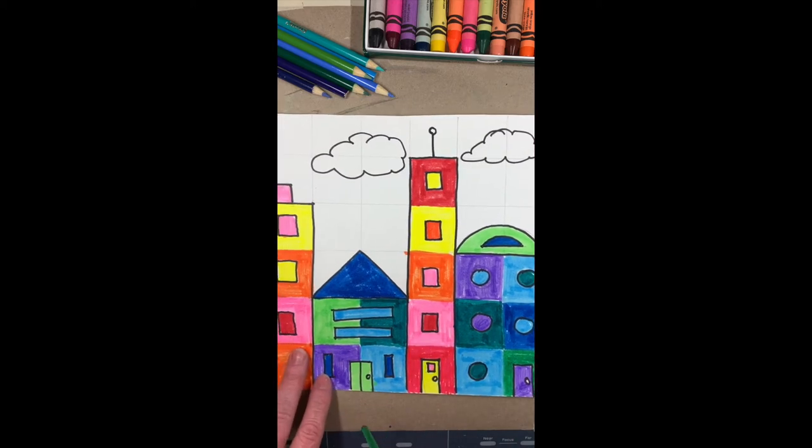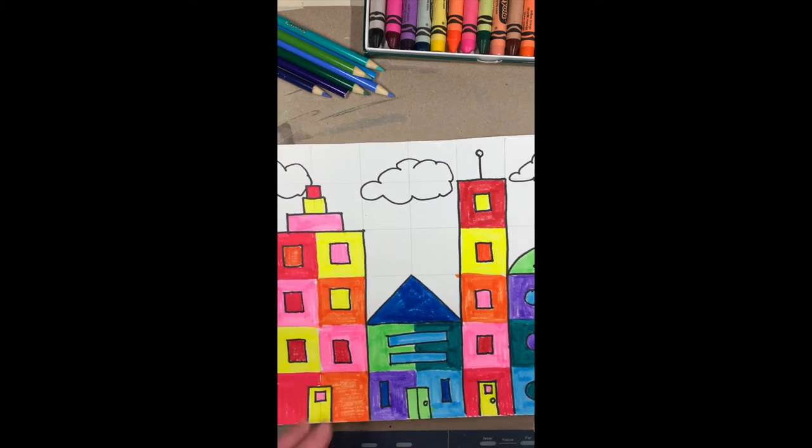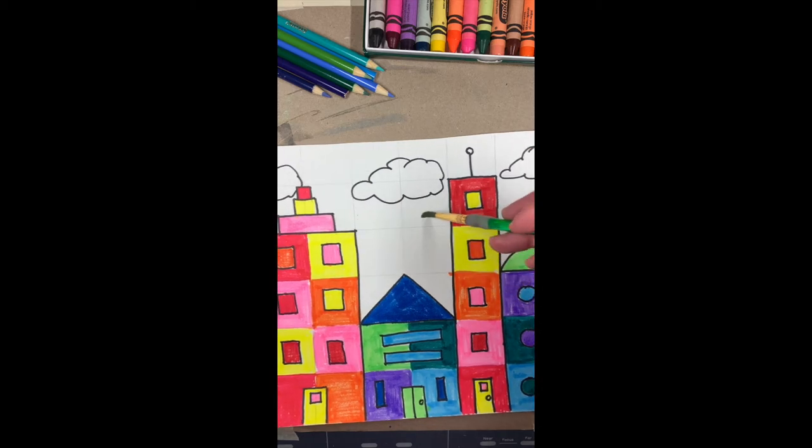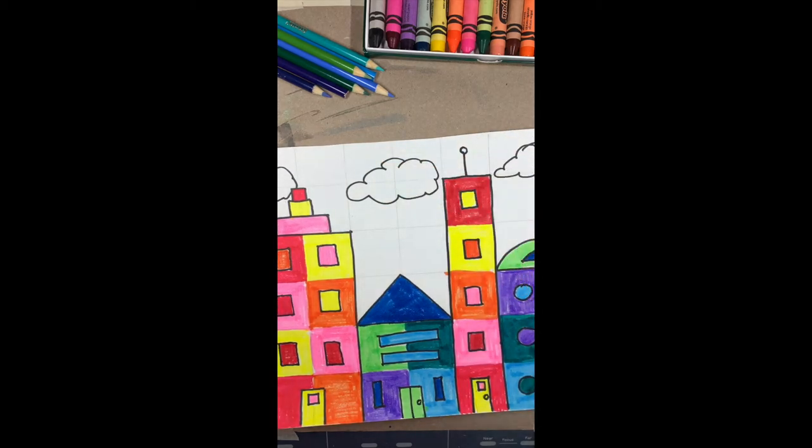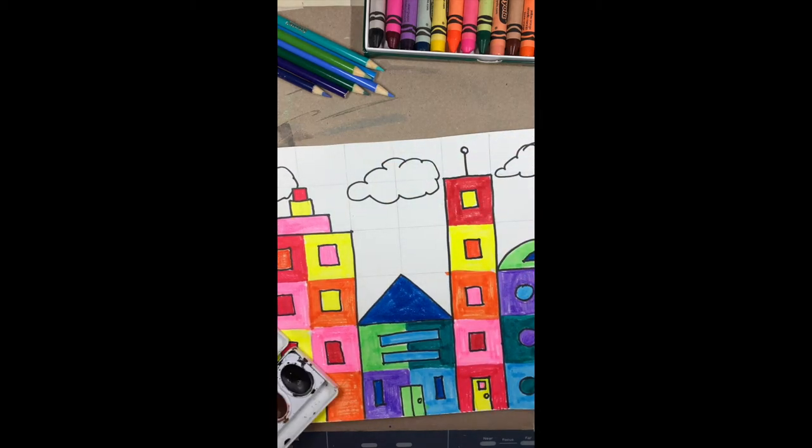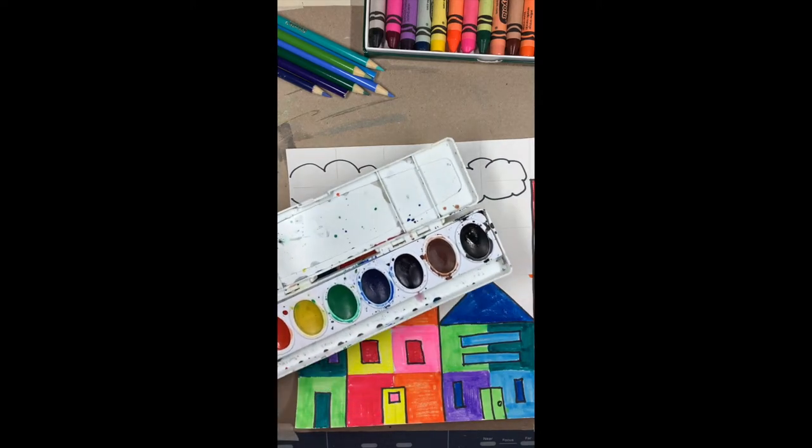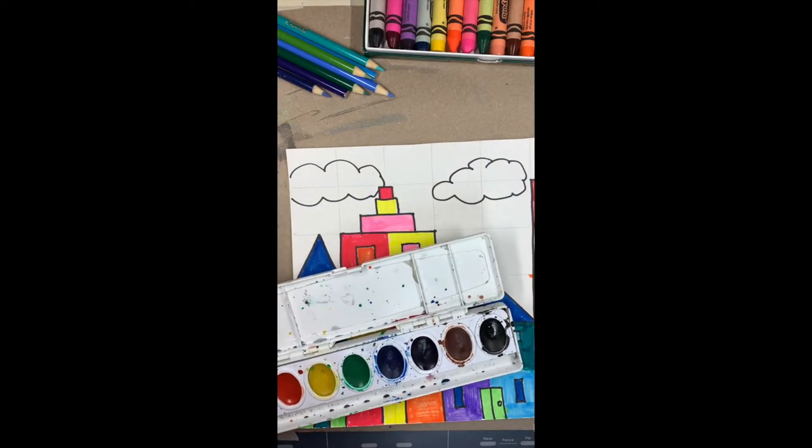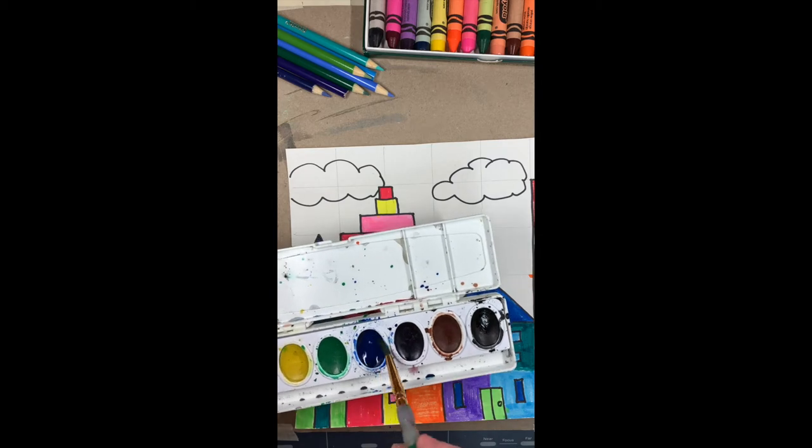Now regarding the sky, if we were in school we'd be mixing tempera paint with white, blue with white, to make different tints of blue in the sky. Our next best thing, if you happen to have watercolors, you can use watercolors to achieve the same thing.